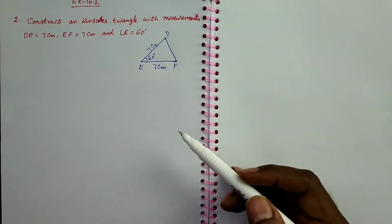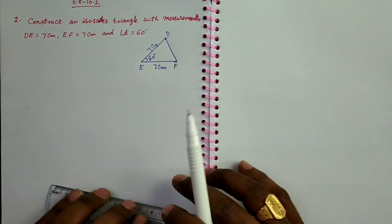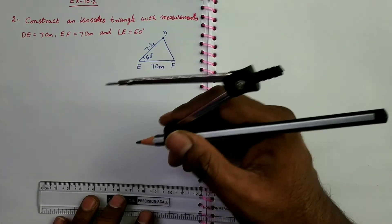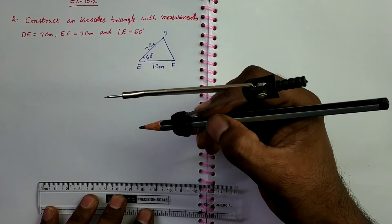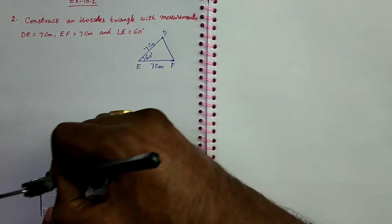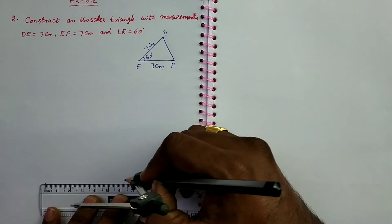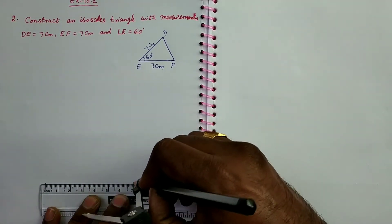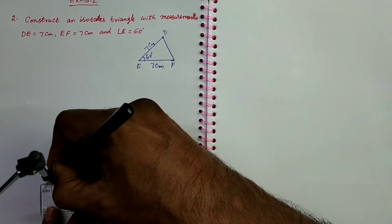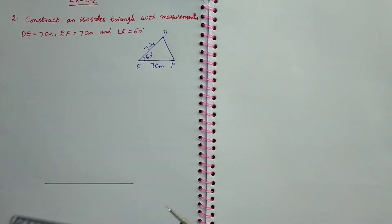Let us go to construct the original diagram. Take EF as base with 7 cm. So keep one point at 0 and keep another point at 7. So this is the 7 cm.